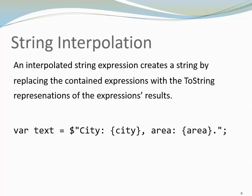Let's look at an example. Here we create a string that lists a city and its area. This is the interpolated string. Note the dollar sign. An interpolated string always starts with a dollar sign. It uses double quotes as delimiters just like any other string in C#.